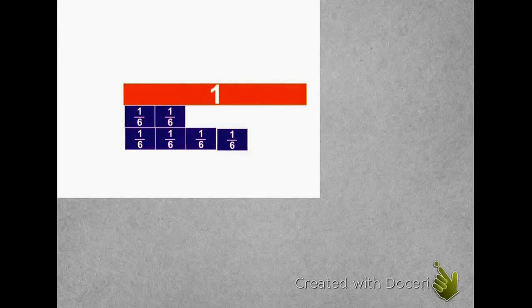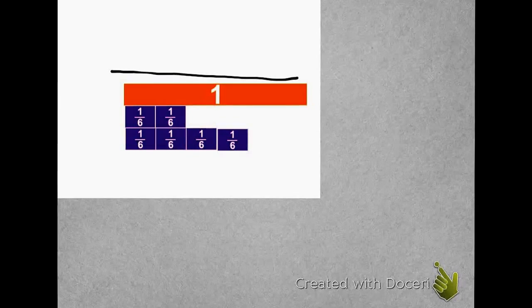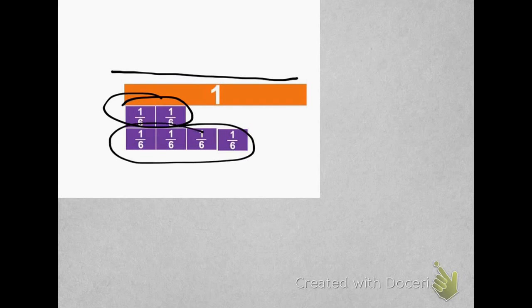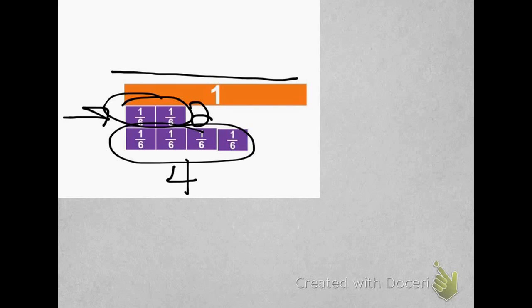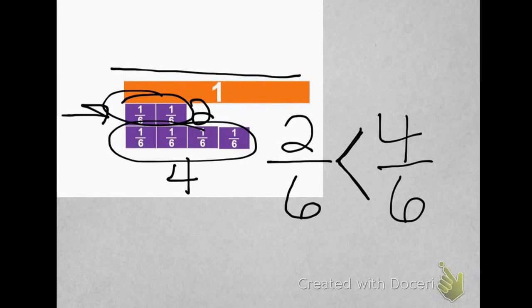Let's compare this to a number line. Here I have one whole, and then I have 2 sixths and 4 sixths. Once again, their denominators are the same. They're all cut into the exact same equal size. But here I have less because there's only 2, and here I have more because there's 4. So, 4 sixths is greater than 2 sixths.